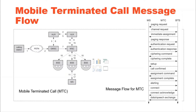Steps 5 and 6: after receiving MSRN, the HLR can determine the MSC responsible for the mobile station and forwards this information to the Gateway Mobile Switching Center (GMSC).